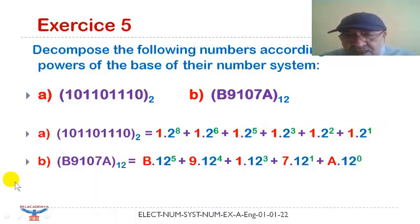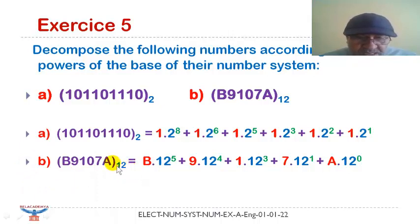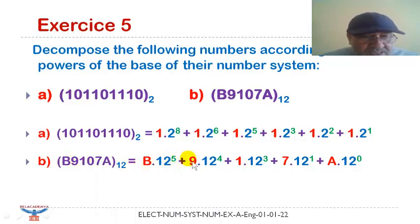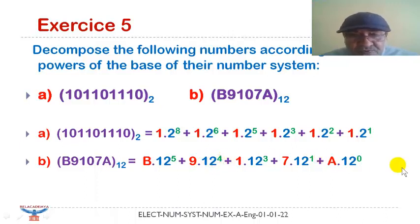For the base twelve number, we have ranks zero through five — so we have B multiplied by 12 to the power five, plus three multiplied by 12 to the power five, plus nine multiplied by 12 to the power four, and so on for the remaining terms.